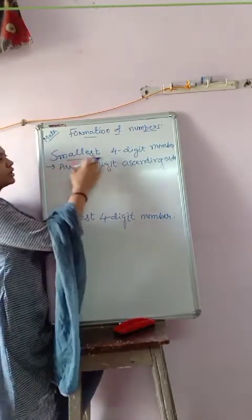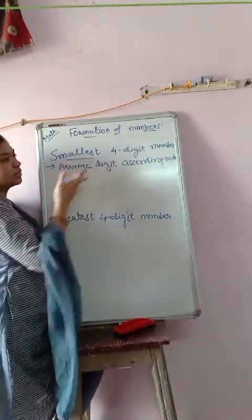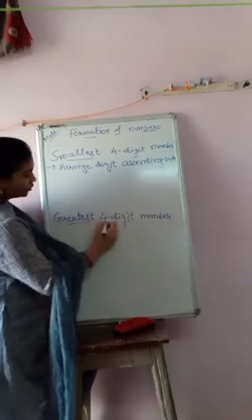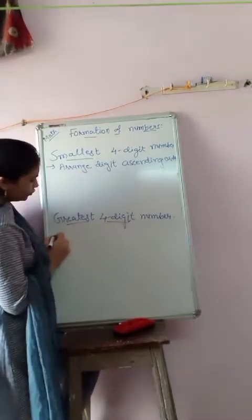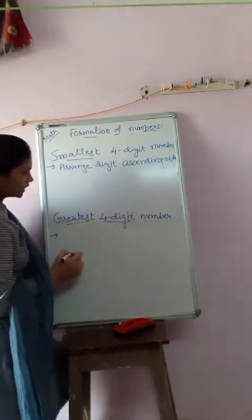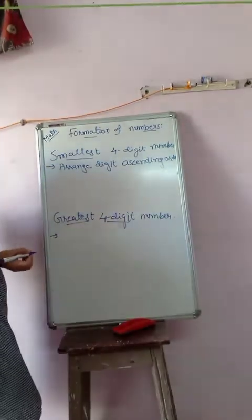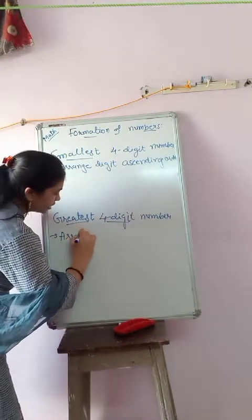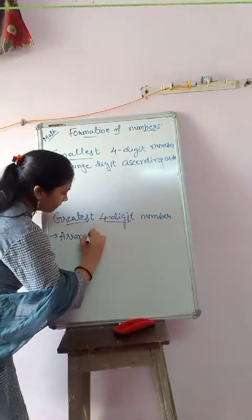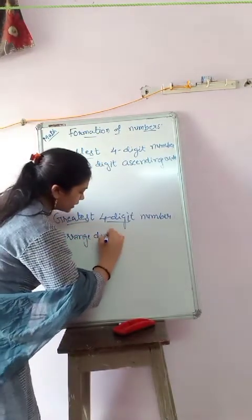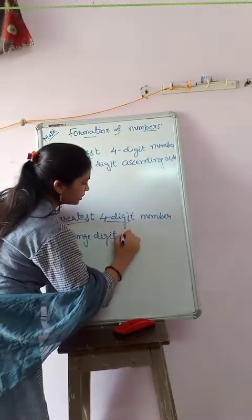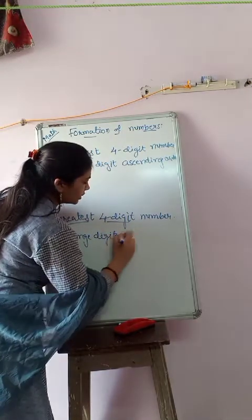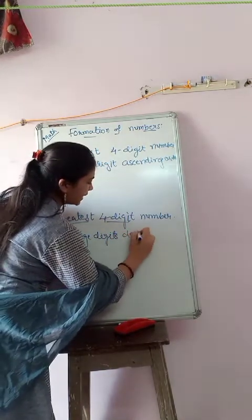And what should you do to create the greatest four-digit number? You have to arrange the digits in descending order.